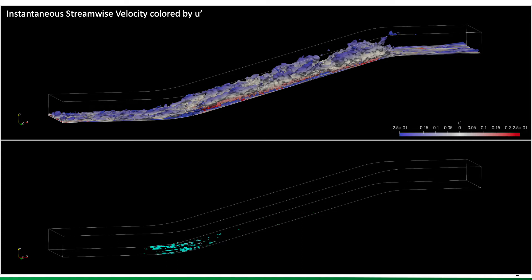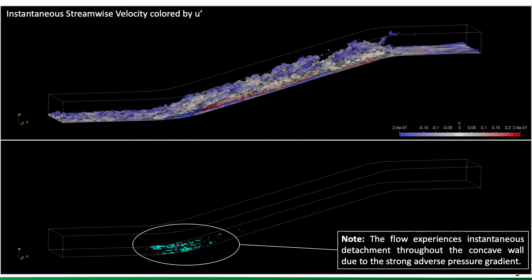Now let's study several things that are going on here. As I just mentioned, we see the instantaneous flow detachment at the bottom, induced by the adverse pressure gradient throughout the concave wall.